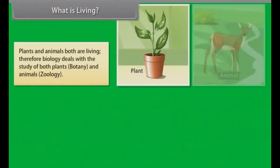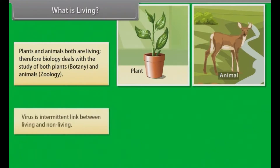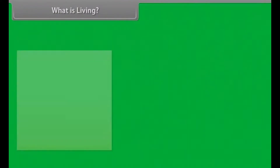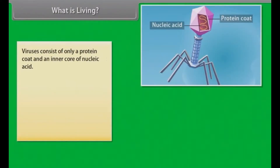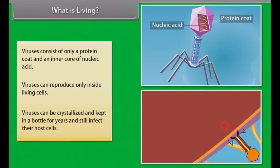Plants and animals both are living. Therefore, biology deals with the study of both plants (botany) and animals (zoology). Viruses are an intermittent link between living and non-living. Viruses consist of only a protein coat and an inner core of nucleic acid. Viruses can reproduce only inside living cells, but can also be crystallized and kept in a bottle for years and still infect their host cells.